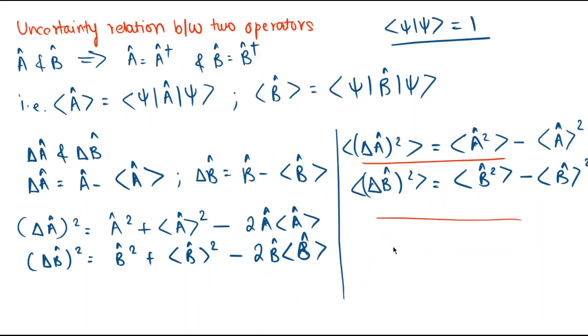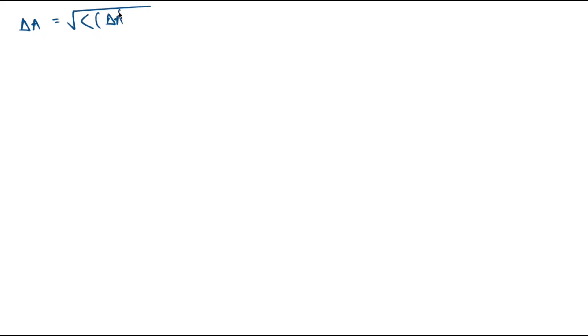Moving further, the uncertainty delta-A is defined as the square root of the expectation value of delta-A-cap squared, giving us the expression we just arrived at. Similarly, delta-B equals the square root of the expectation value of delta-B-cap squared.